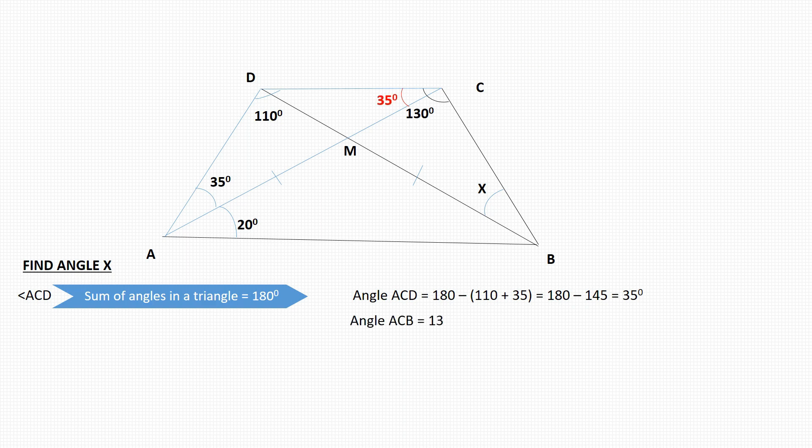Secondly, let us look at how to find angle ACB. Angle ACB, we're going to take 130, which is the total of DCB, so we subtract the 35 that we have just found to give us 95 degrees.